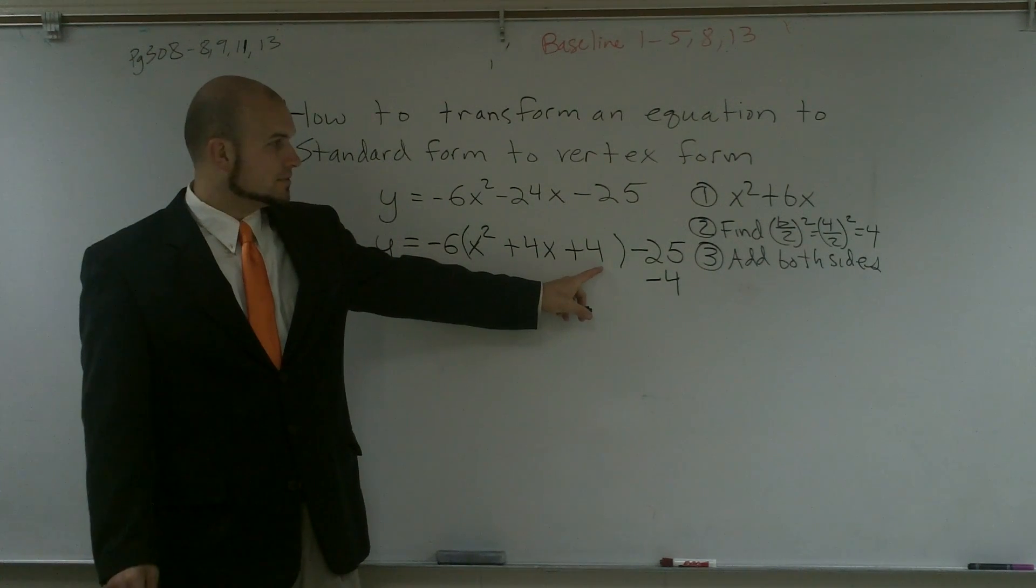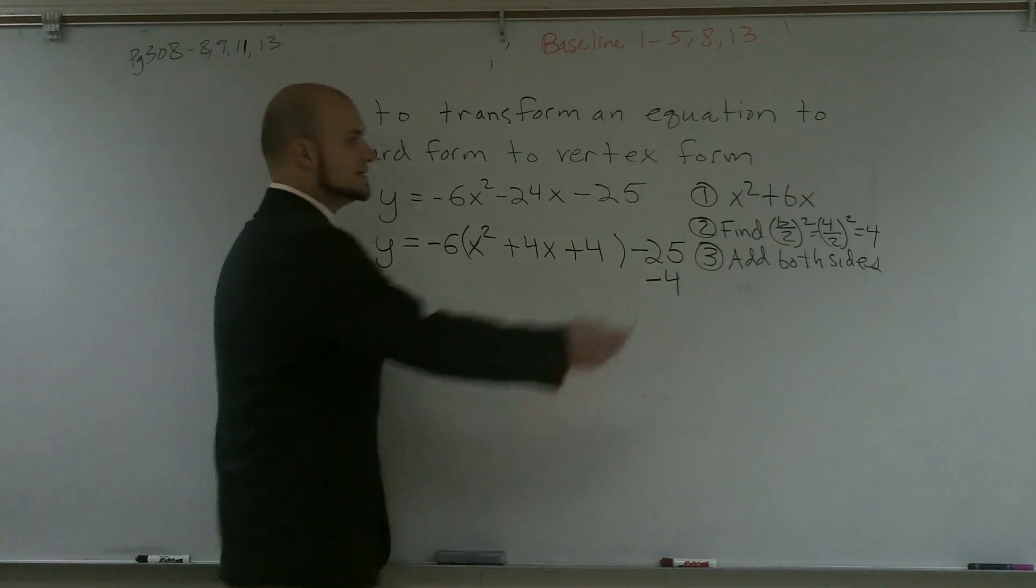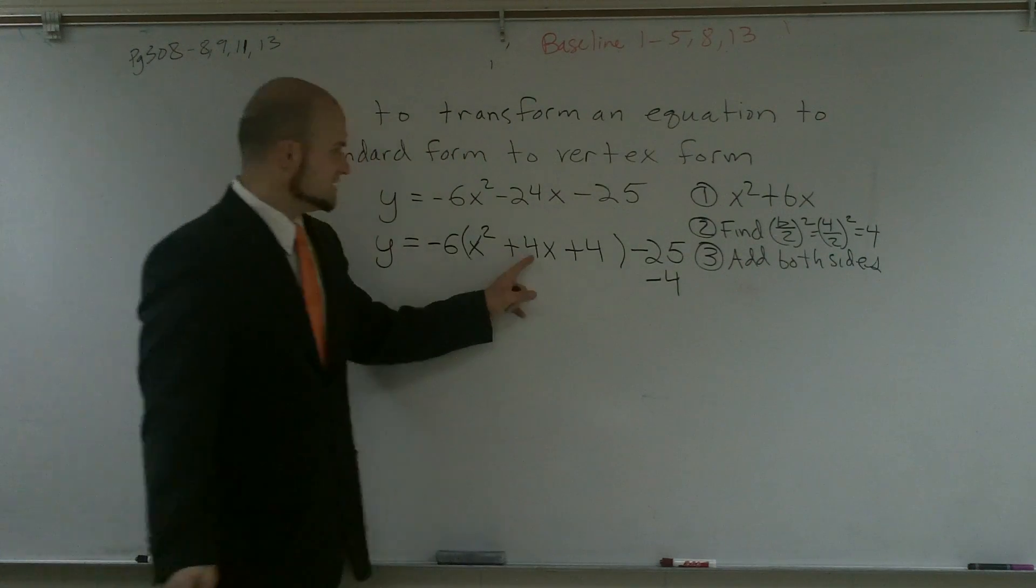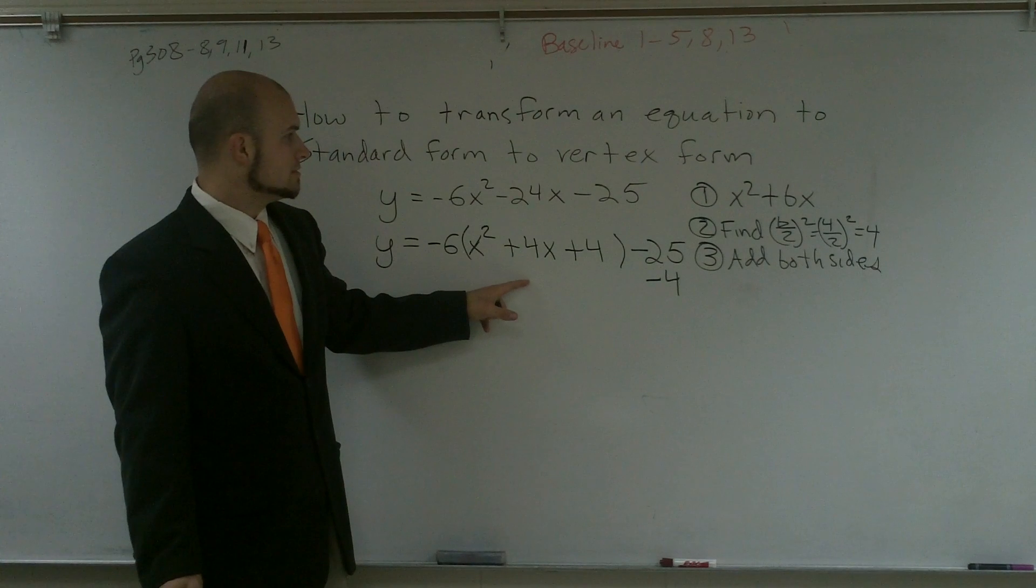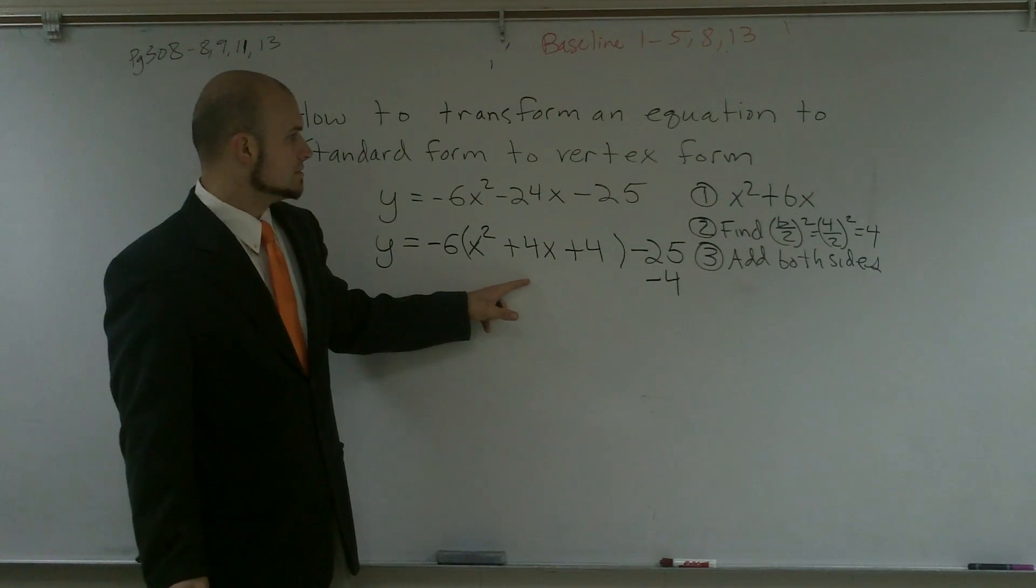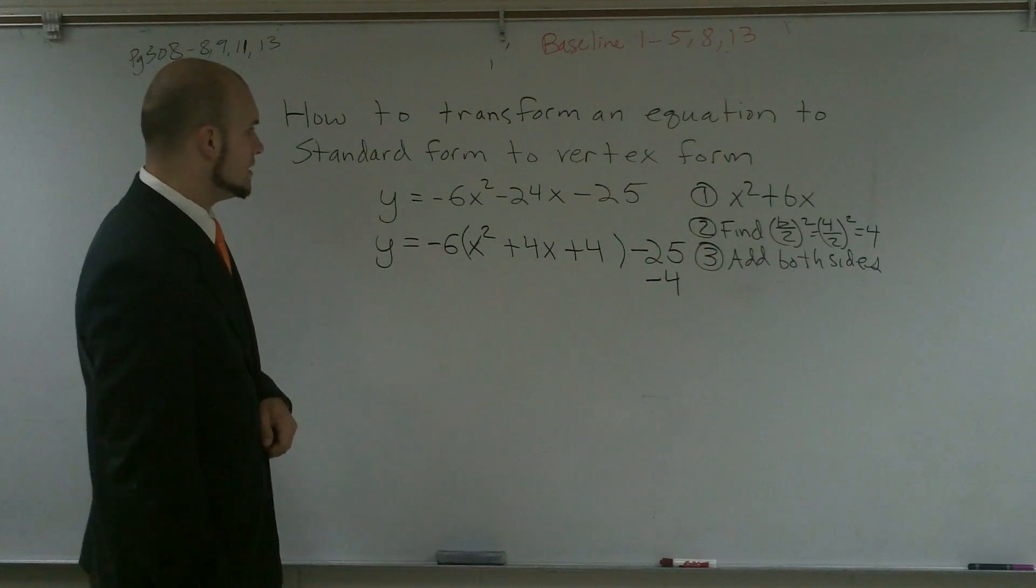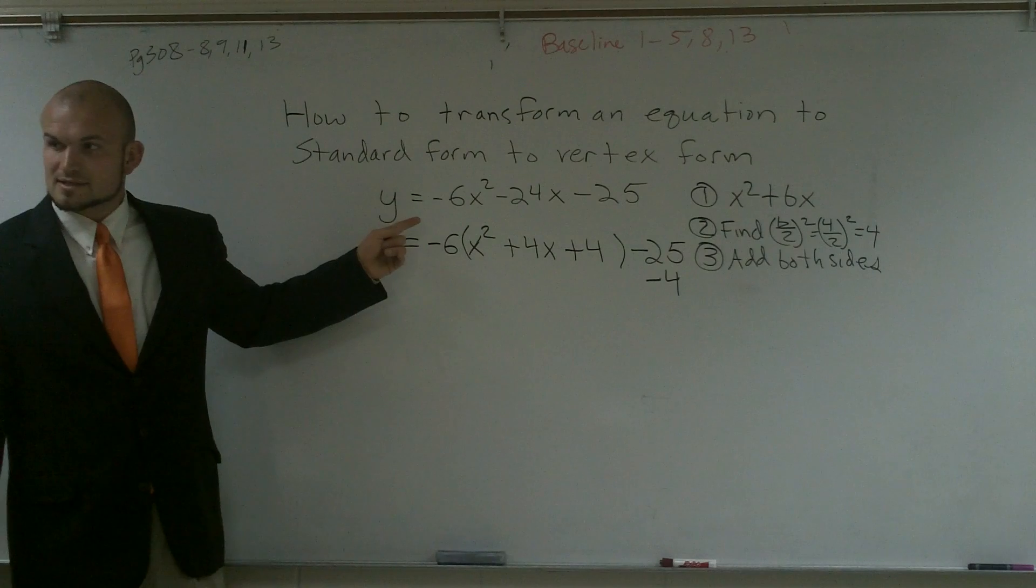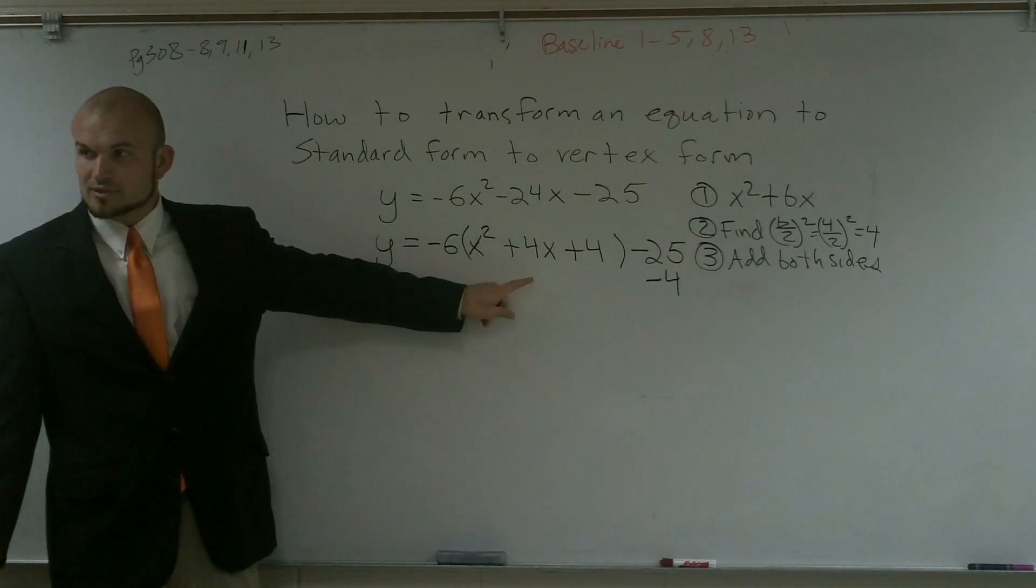How did I get the 4? It's the formula for a complete square is b over 2 squared. So b is 4. I divided it by 2. What I did was I factored out a 6. So I took out the 6. So now here's my new, when I took out the 6, now this is my new b that I was using.